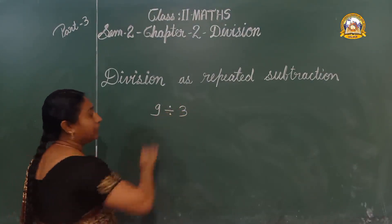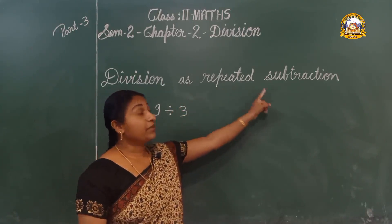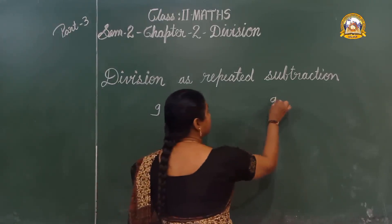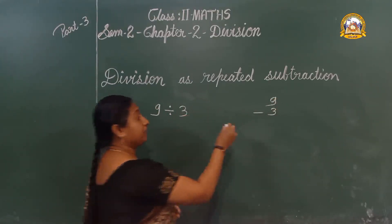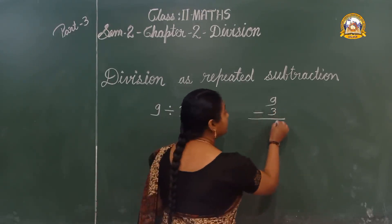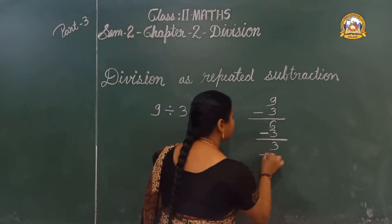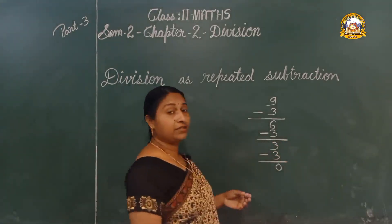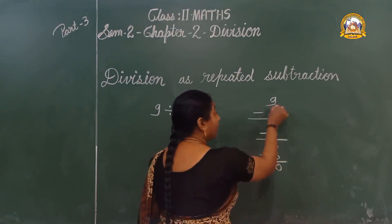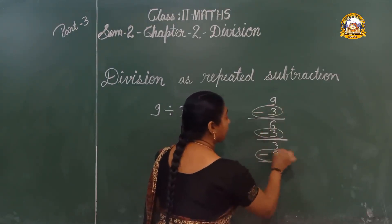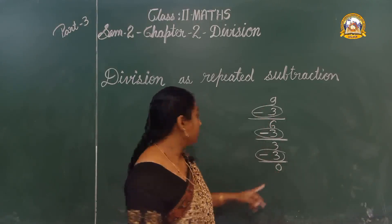For example, 9 divided by 3. We can check how many times 3 can be subtracted from 9 by repeated subtraction. First, 9 minus 3 — what do we do? We subtract: 9 minus 3 is 6, 6 minus 3 is 3, then 3 minus 3 is 0.